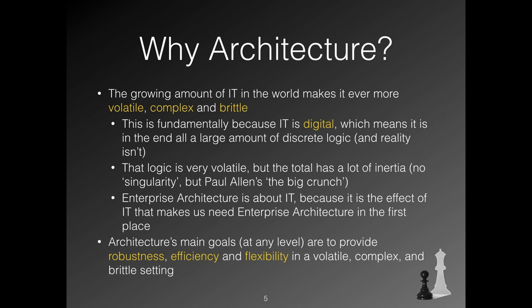You might wonder: what about alignment? Aren't we supposed to focus on business value and make sure IT supports our business strategy and goals? The answer is yes. But first, it is the business that defines the value, and second, business demands change much faster than the core landscape can change. The average lifespan of a business strategy is about 4 years. The average lifespan of a core element or design decision in your landscape may be around 15 years. Alignment mostly means being flexible enough so you can follow the business at a reasonable expense.